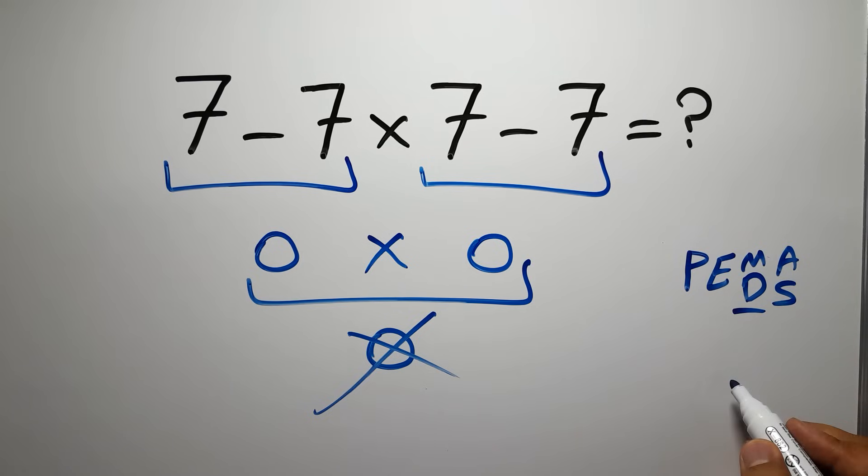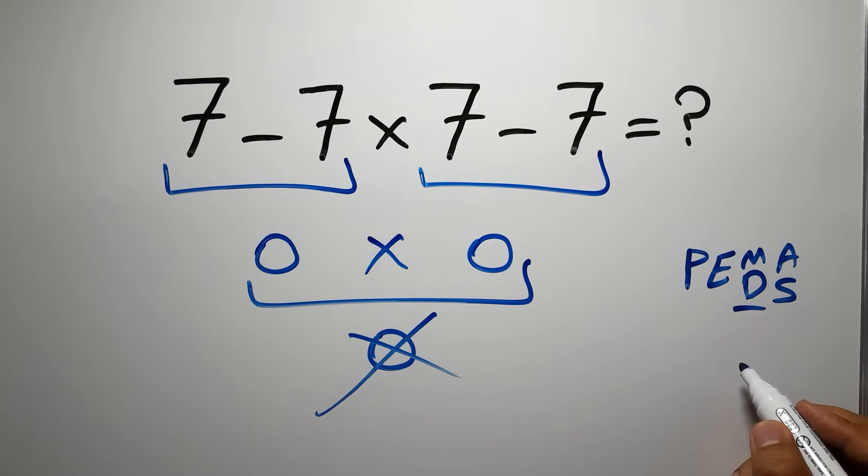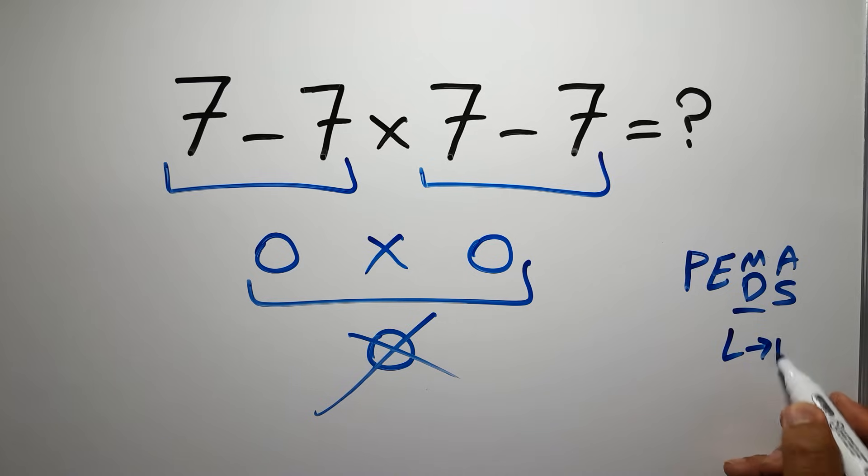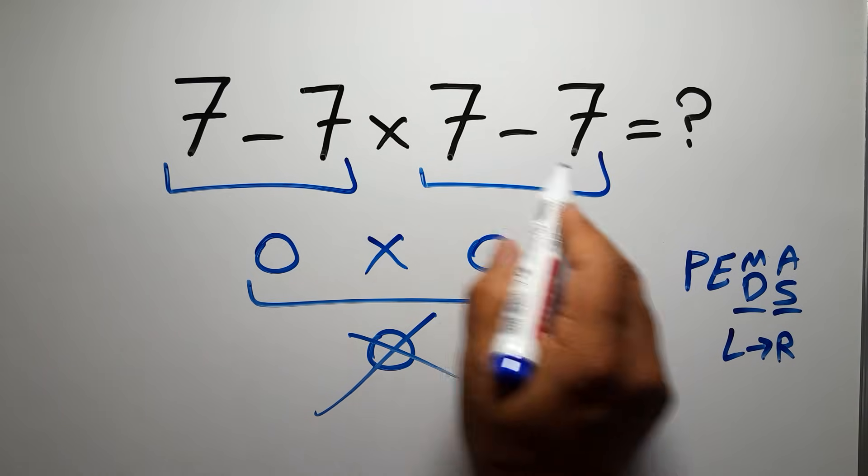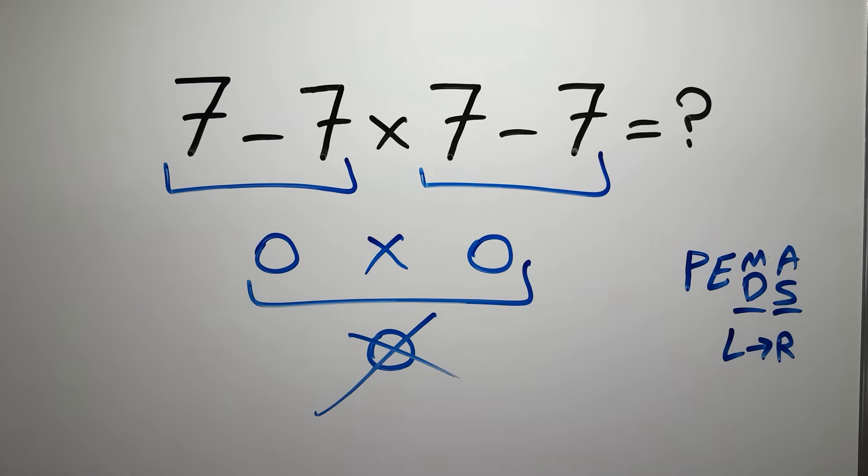Remember that multiplication and division have equal priority, and we have to work from left to right. The same applies to addition and subtraction. In this expression, we have two subtractions and one multiplication.